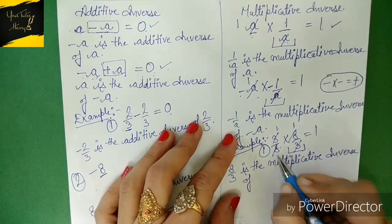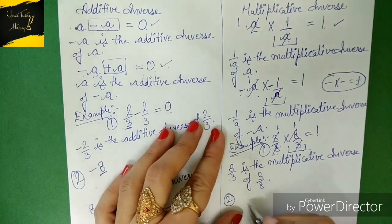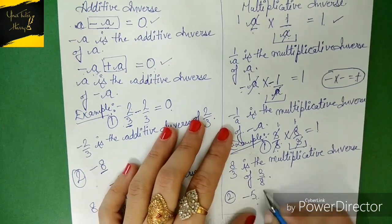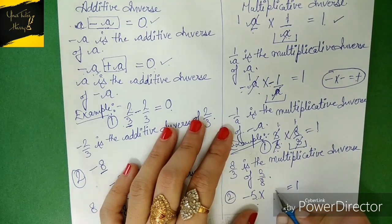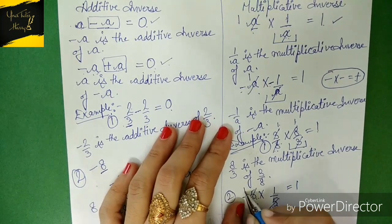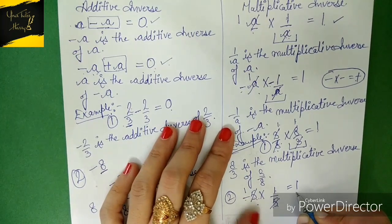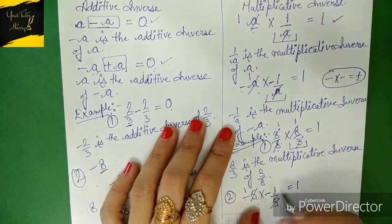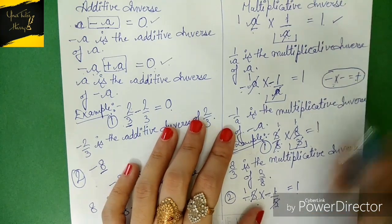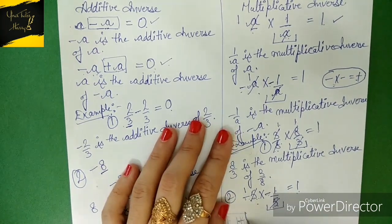Let's take another example: suppose we have '-5'. We need the multiplicative inverse of '-5'. We multiply by '1/5' so that five gets cancelled, giving one, but with a minus sign that gives minus one. Since we need plus one, we add an extra minus sign, making it '-1/5'. Minus multiplied by minus gives a positive result, so we get plus one. So '-1/5' is the multiplicative inverse of '-5'.